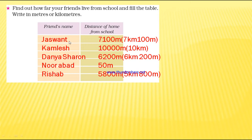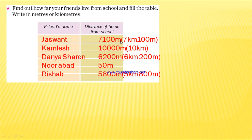The first one is Jaswant, 7100 meters. We can also write in kilometers. The last three digits are taken as meters and the remaining digits as kilometers. So that is 7 kilometers, 100 meters.